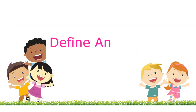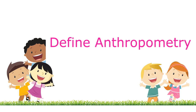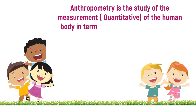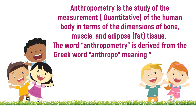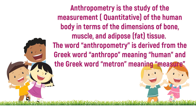Define Anthropometry. Anthropometry is the study of the quantitative measurement of the human body in terms of the dimensions of bone, muscle, and adipose (fat) tissue. The word anthropometry is derived from the Greek word 'anthropo' meaning human and the Greek word 'metron' meaning measure.